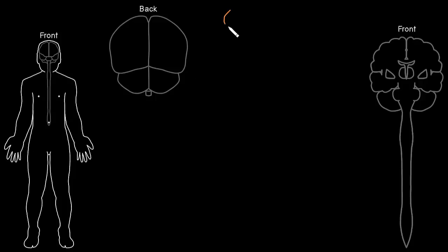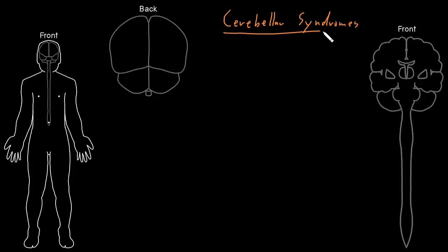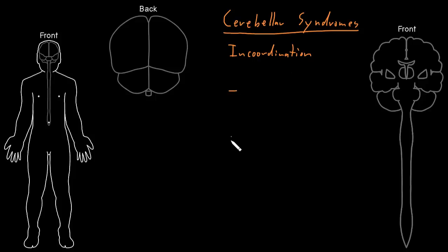In this video, I'm going to talk about cerebellar syndromes — syndromes we can see with dysfunction of the cerebellum. There are a number of abnormalities we can see with dysfunction of different parts of the cerebellum, and basically all of these cerebellar syndromes involve in-coordination — abnormal coordination of movements of different parts of the body. I like to think about four different types of in-coordination, although there are more abnormalities we can see with cerebellar dysfunction.